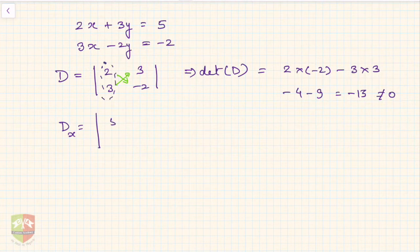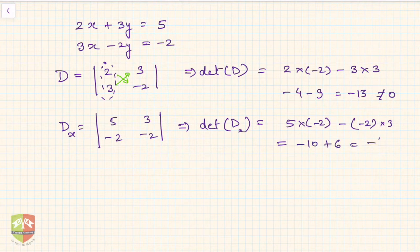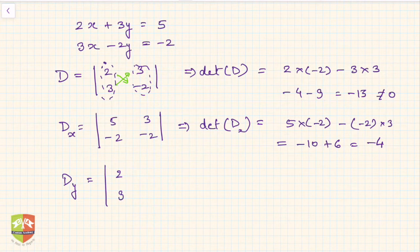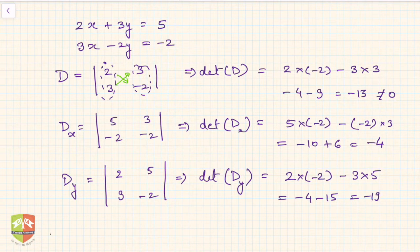Now let us find Dx. Replace the coefficients of x (2 and 3) with the constant terms (5 and −2), keeping the y-column: |5, 3; −2, −2|. The value of Dx is 5×(−2) minus (−2)×3 = −10 + 6 = −4. For Dy, replace the coefficients of y (3 and −2) with the constant terms: |2, 5; 3, −2|. The value of Dy is 2×(−2) minus 3×5 = −4 − 15 = −19.